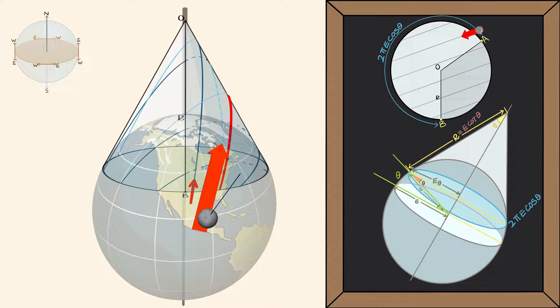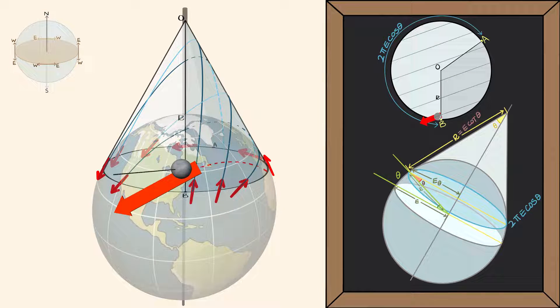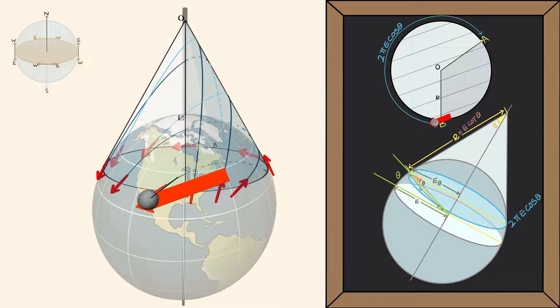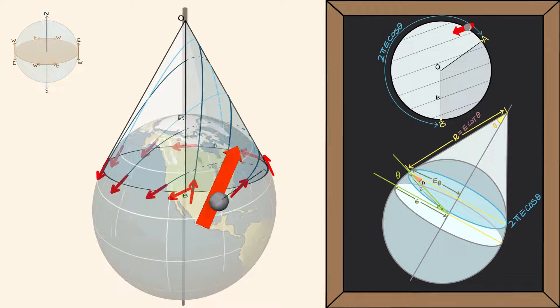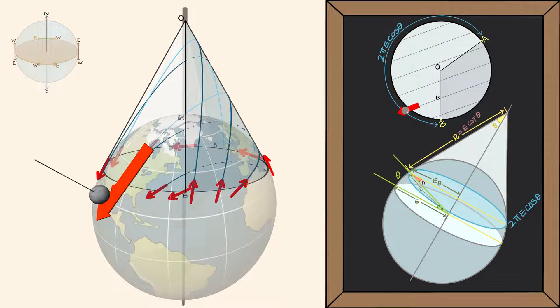Let's do this for all the points where the parallel lines touches Earth. We can now visually understand why from the perspective of someone on the surface, the pendulum rotates. It's because the pendulum is still fixed on the cone as it's being flung around Earth.